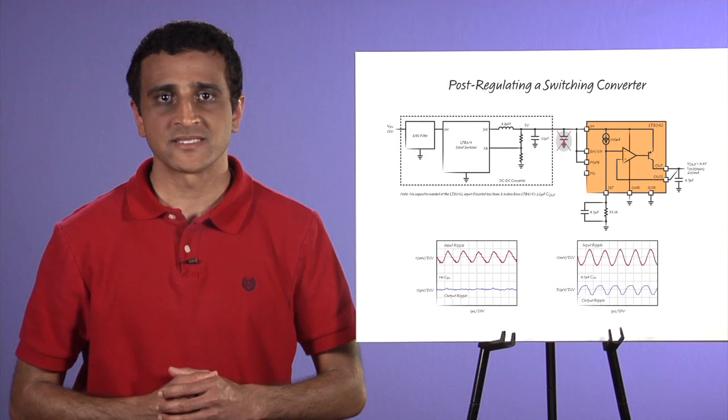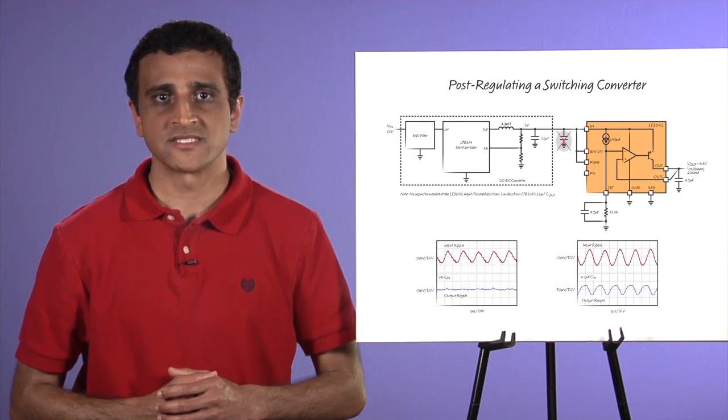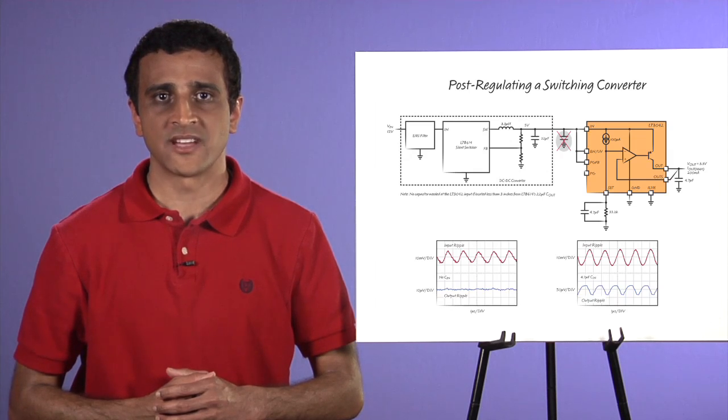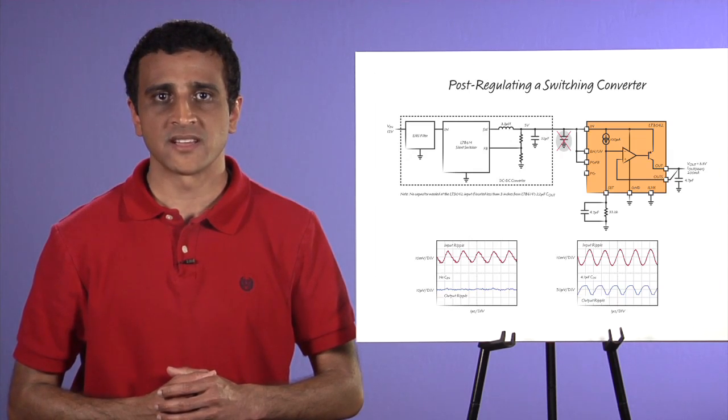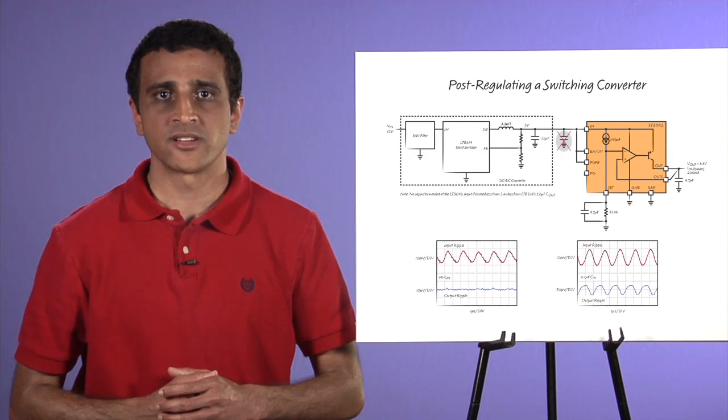LT3042's ultra-high PSR over a wide frequency range is paramount in powering noise-sensitive applications while post-regulating a switching converter. Nonetheless, in order to achieve ultra-high PSR, care must be taken to minimize electromagnetic coupling from the switching converter to the LDO output.